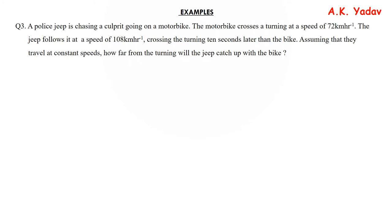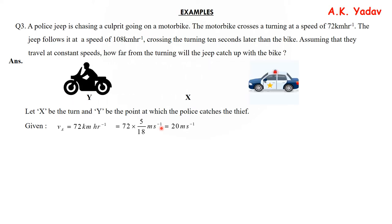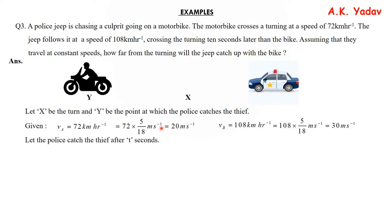Let's move to question number 3. A police jeep is chasing a culprit on a motorbike. The motorbike crosses a turning at 72 km/h, the jeep follows at 108 km/h and crosses the turning 10 seconds later. We need to find at what distance the jeep catches the bike. Let X be the turning and Y the catch point. The thief moves at 72 km/h = 20 m/s, and the police car at 108 km/h = 30 m/s.